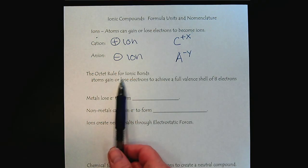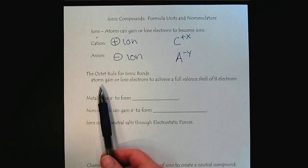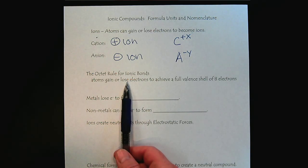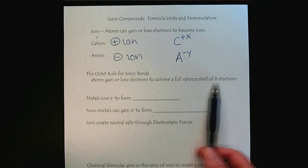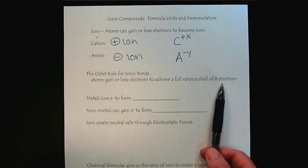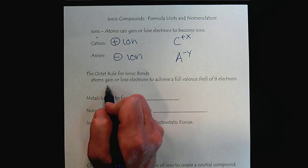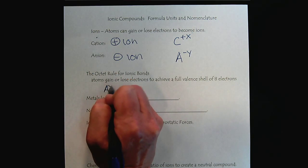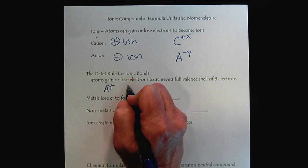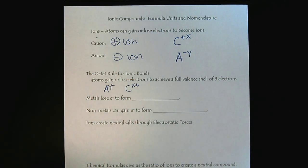Now, the octet rule for ionic bonds is where atoms will gain or lose electrons to achieve a full valence shell of eight electrons. So if the atoms are gaining electrons, they become an anion. And if they lose electrons, they become a cation.